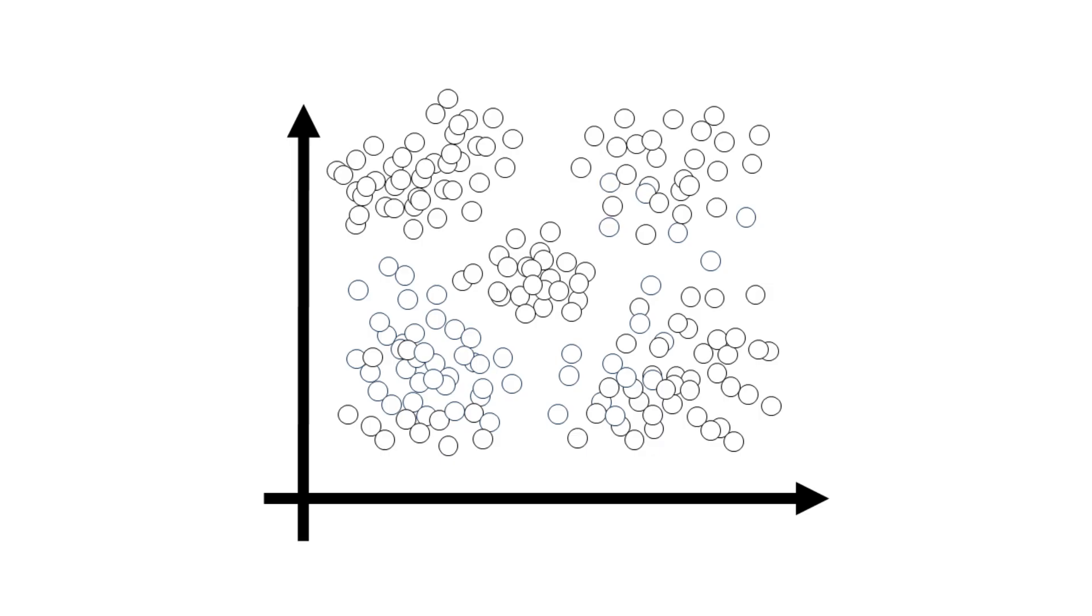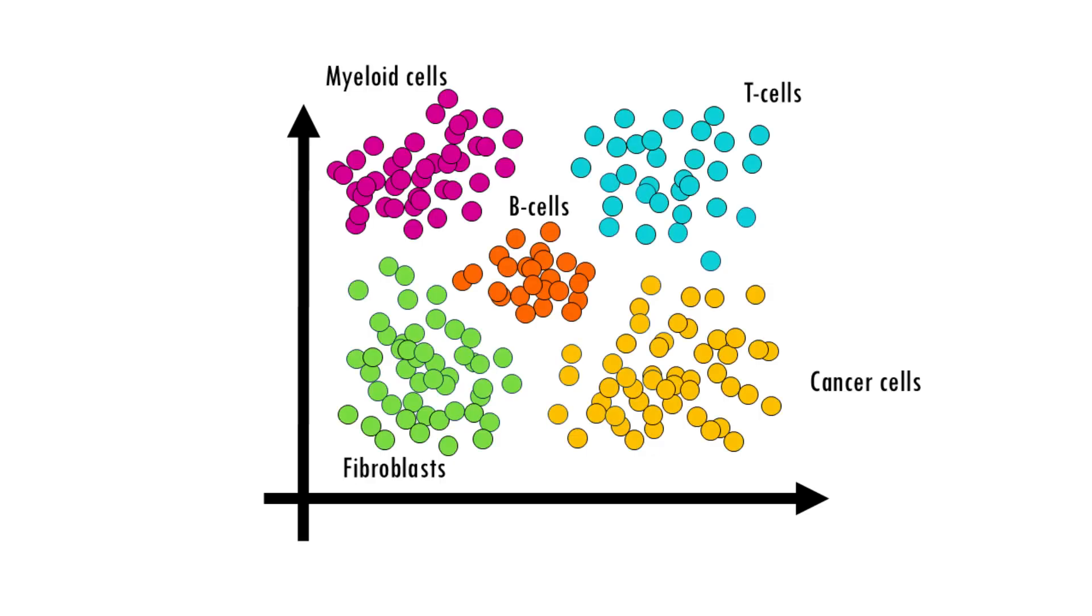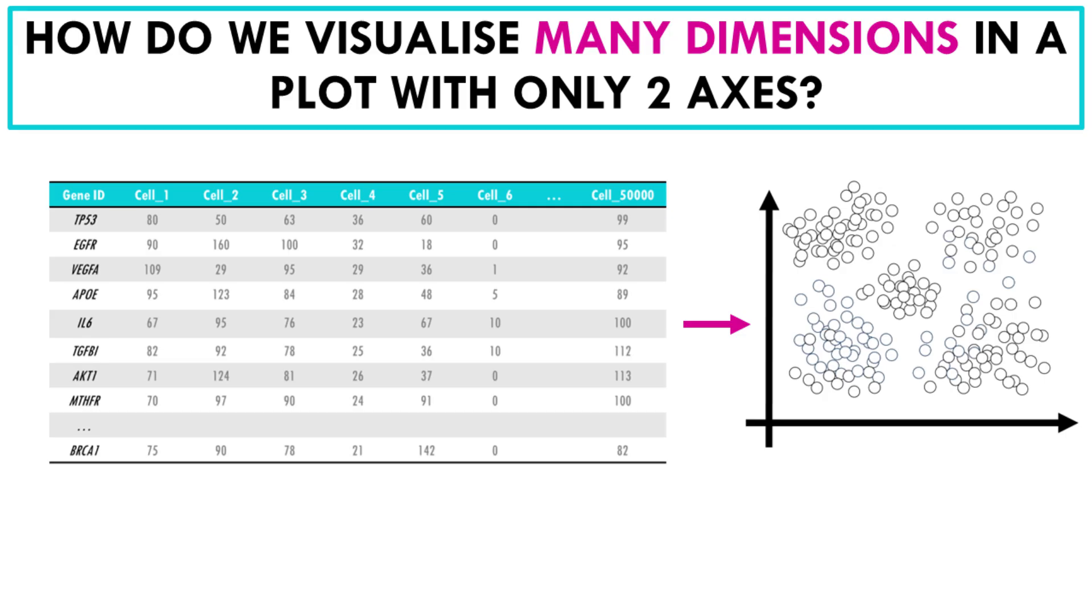For example, to identify clusters of cells that group together because they have similar gene expression profiles. In other words, they are cells from the same cell type or cell identity.